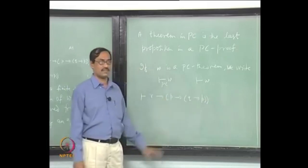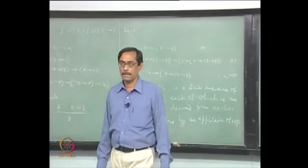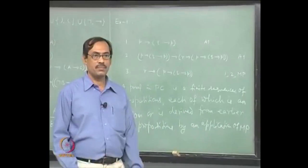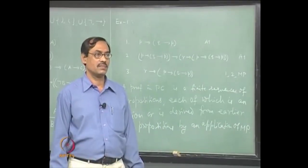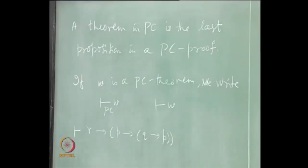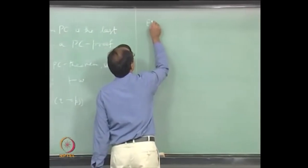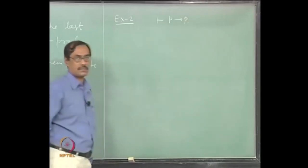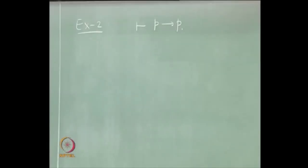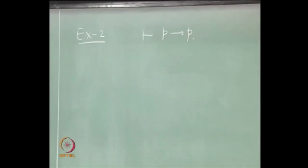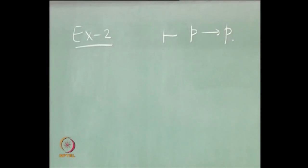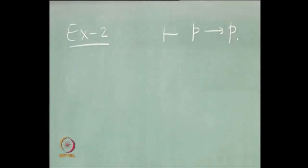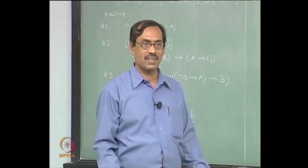We will prove a very simple thing first: that P → P is a theorem. The question is how do we proceed and which axiom we start with? We have to start with axioms anyway. If only two propositions are there, you can use MP (Modus Ponens); otherwise you cannot. It requires exactly two propositions to be used. If there are more, you choose two and apply wherever applicable, but they should be in the form A, A → B to derive B.